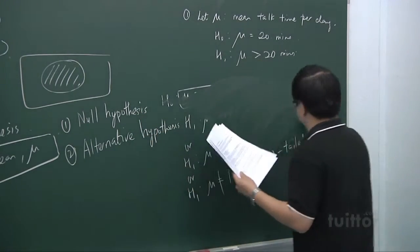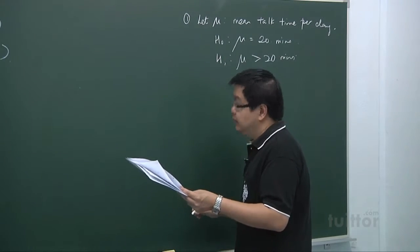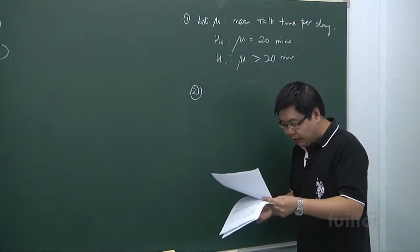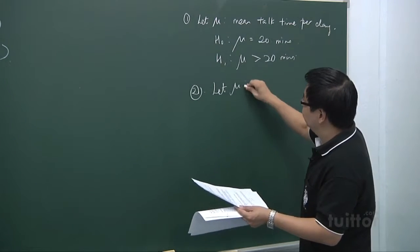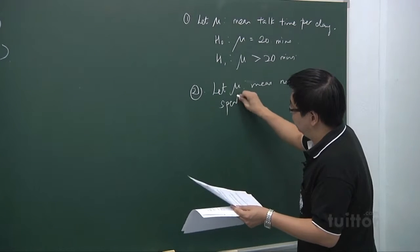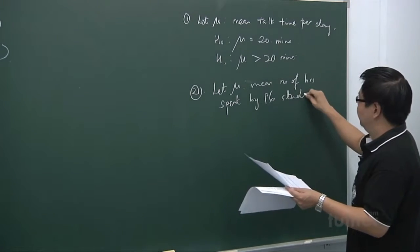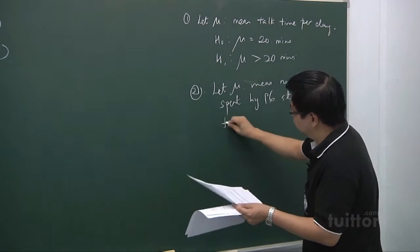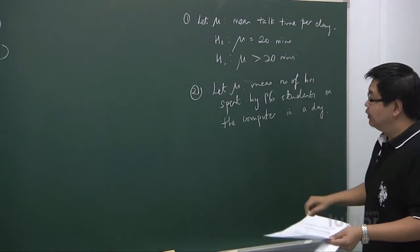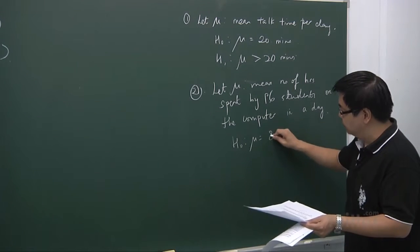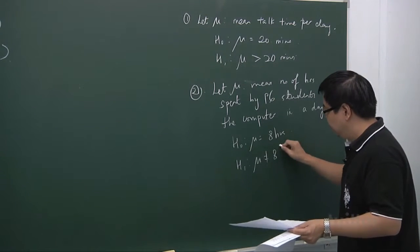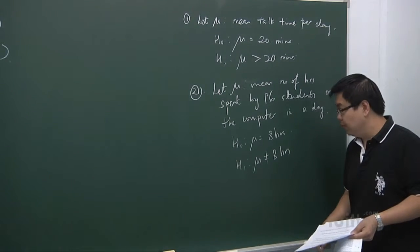The second example says that a teacher in a primary school claimed that the average number of hours spent on a computer by P6 students is 8 hours, and many students disagree with her claim. We let mu be the mean number of hours spent by P6 students on a computer in a day. So H0: mu equals 8 hours. Because many students disagree with her claim, we are testing whether it is really 8 hours or not, so H1: mu not equals 8 hours.